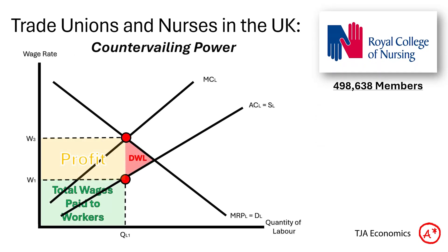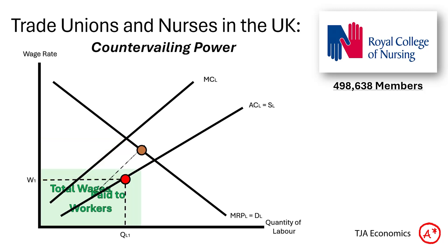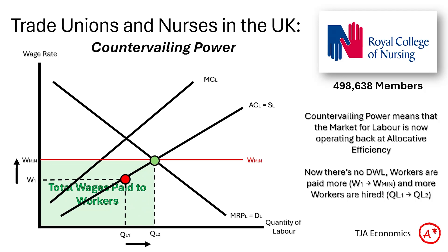We start in our situation of allocative inefficiency — you can see the deadweight loss, the profit, and the small green box. But if the trade union bands together with their 500,000 members and says we will not accept a wage below a certain minimum, what actually happens is they can force the wage back up towards allocative efficiency.